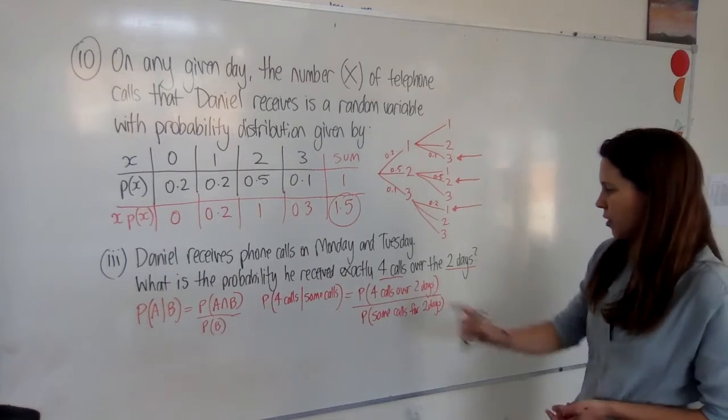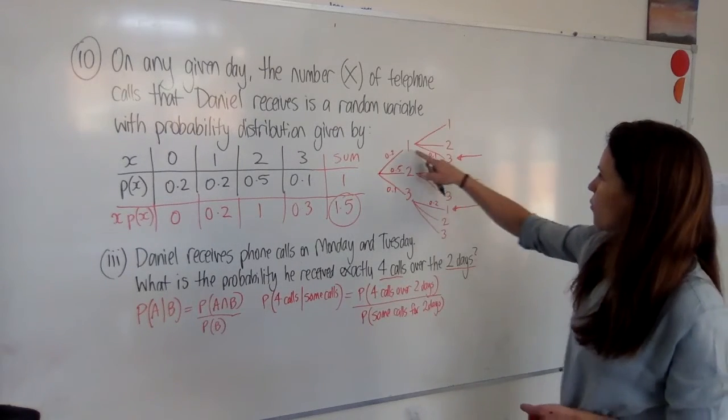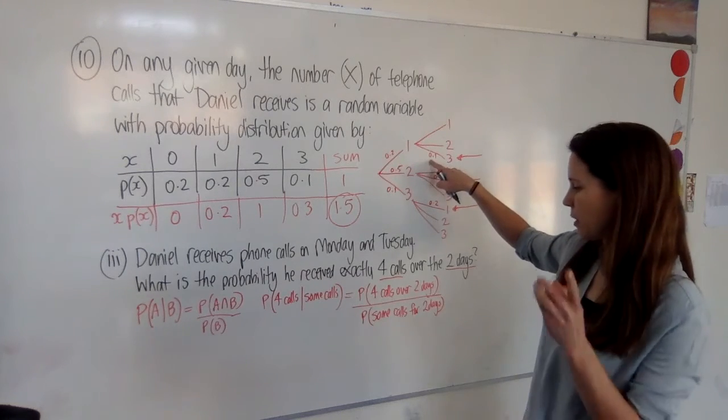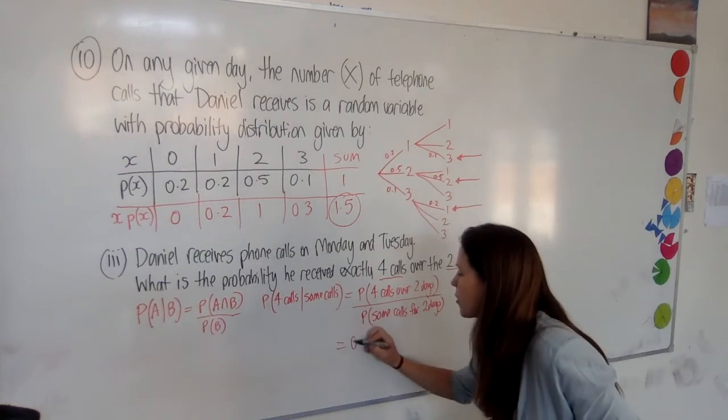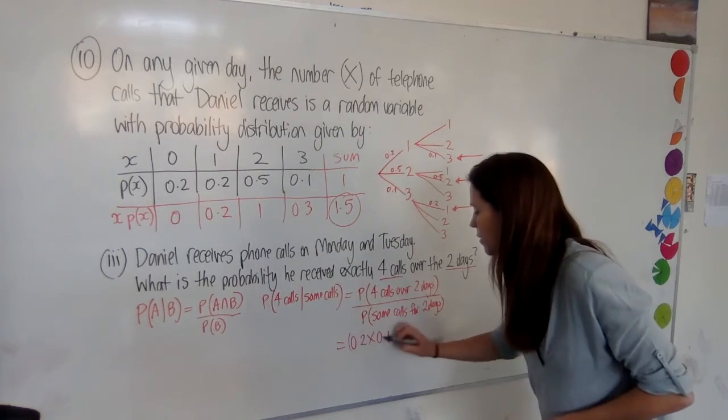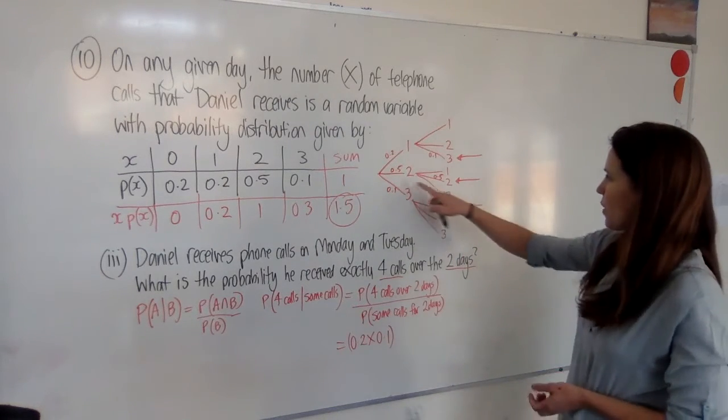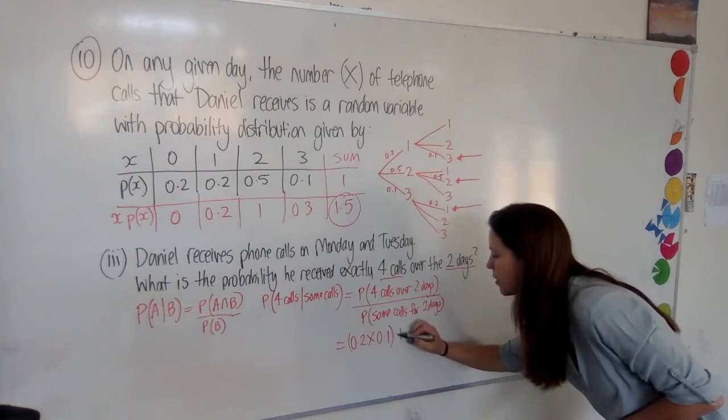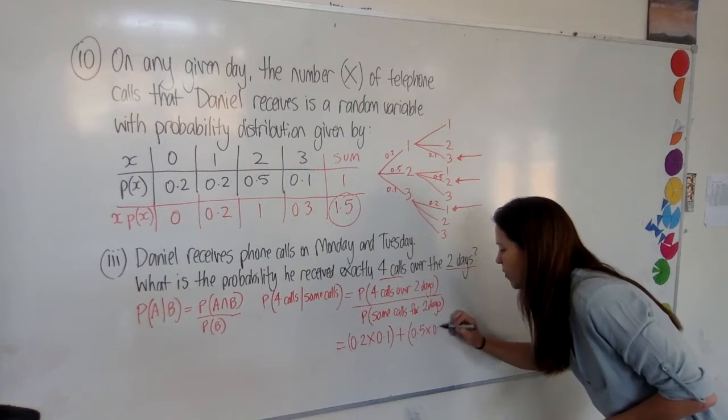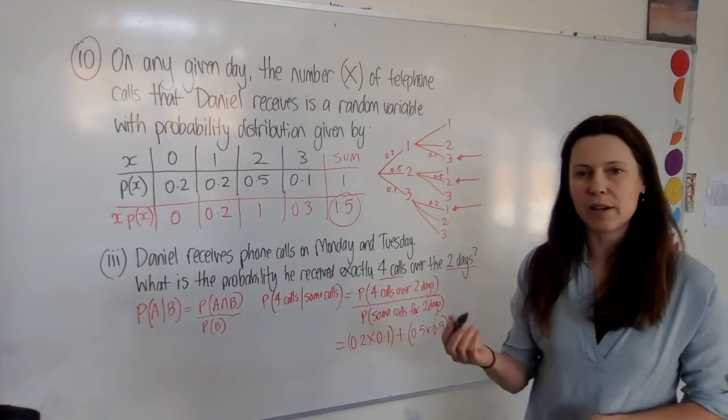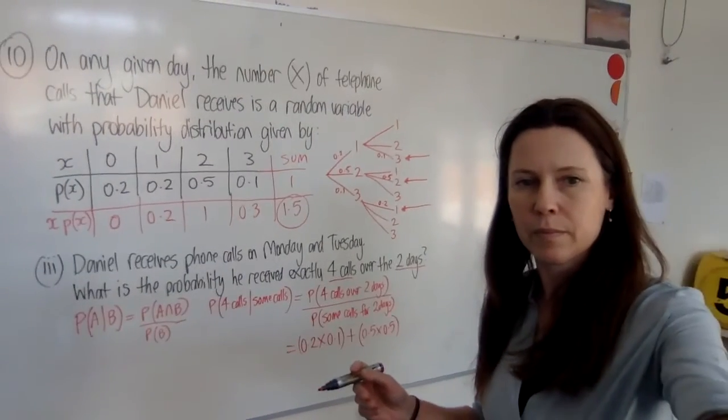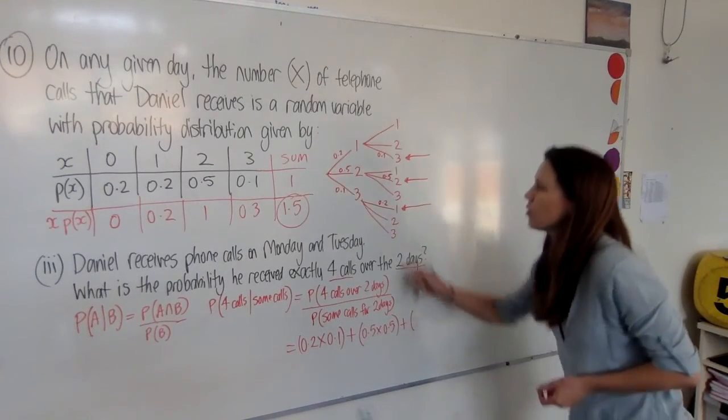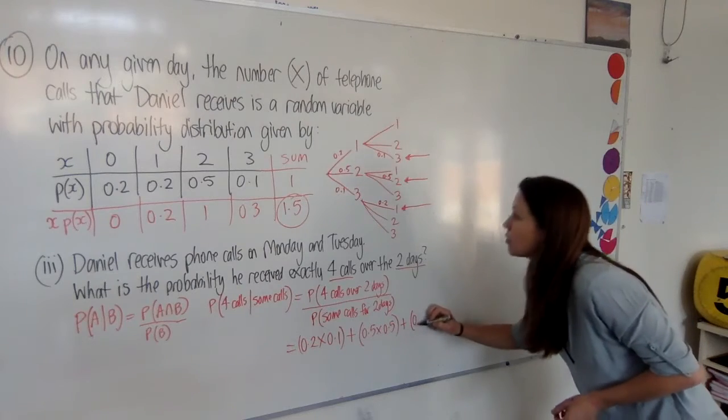All right, let's do the top first. The probability of getting four calls over two days. Well, if we got one and then three, we'd need to do 0.2 times 0.1. So here I'm going to do 0.2 times 0.1. That's for my first bit. Or if I got two calls and then another two calls, that would be 0.5 times 0.5. So I need to add that on. Now I don't mind which of these options happened and that's why I need to add them. Or if I got three calls and then one, that would also work. So let's do 0.1 times 0.2.